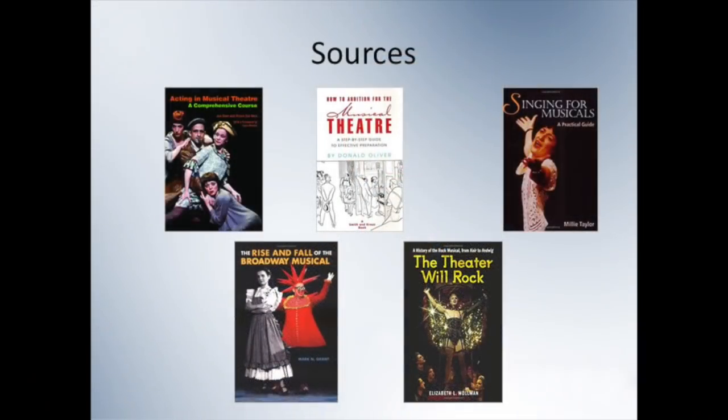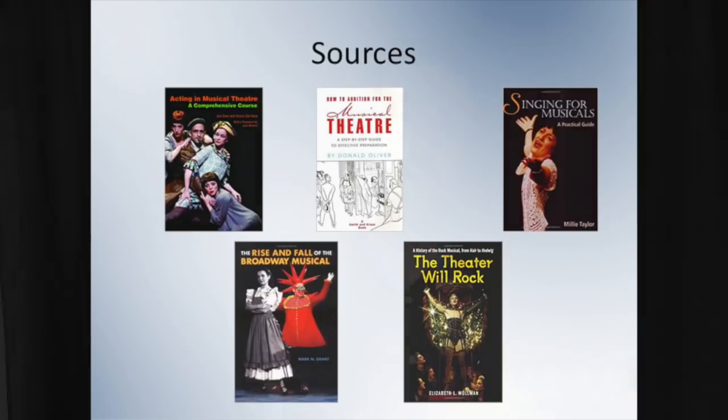Matt has asked me to put this video together to provide teachers with additional information that will help them adjudicate the music theater portion of the NATS student auditions. I've used the musical theater rubric along with several sources from musical theater literature and merged them together to provide about 40 minutes of training, addressing respiration, alignment and posture, diction, musicianship, and artistry on the six types of musical theater songs you are most likely to encounter in the audition room. We have a lot to cover, so let's get started.